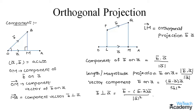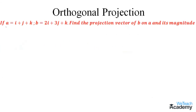Make a note of these formulas. Using these formulas we are going to solve an example. If A bar equals i + j + k and B bar equals 2i + 3j + k, we have to find the projection vector of B bar on A bar and also its magnitude. The formula for the projection vector of B bar on A bar is (B · A) times A divided by mod A squared.